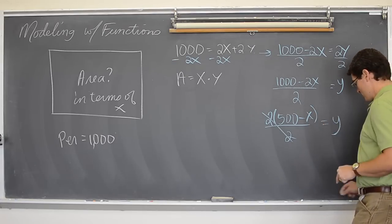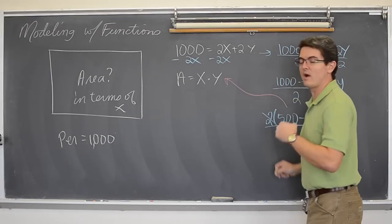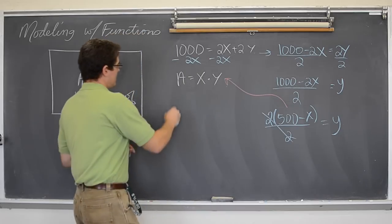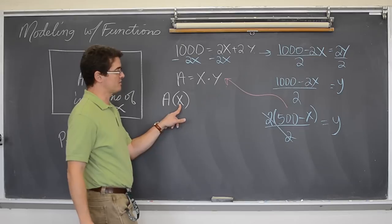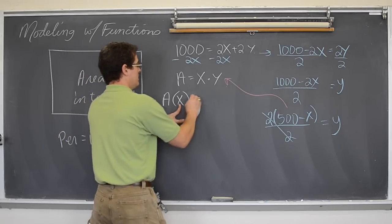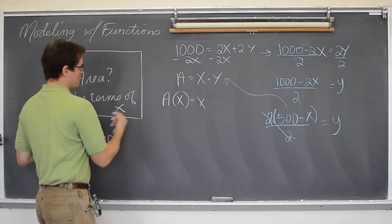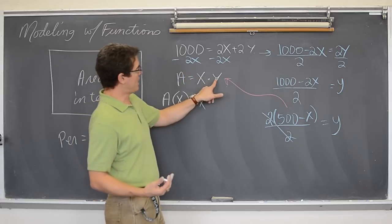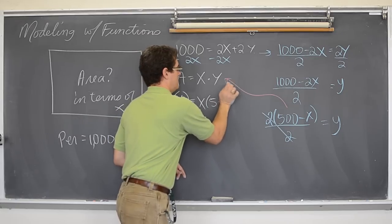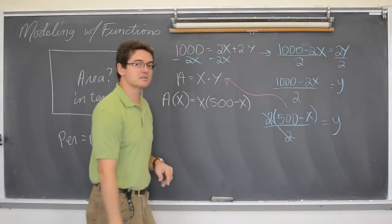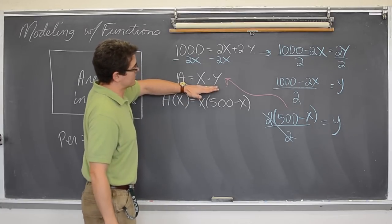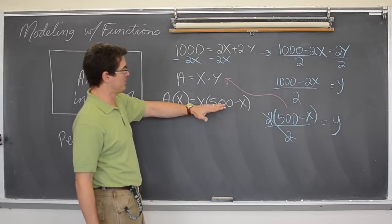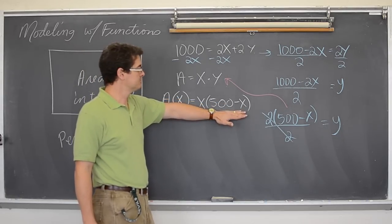That is going to go into the other equation, the equation for area that I actually care about, or want in my final answer. So my area in terms of x now, I can write it in function notation because it is only going to be in terms of x, not x and y, is x times y. But the y is going to come out and 500 minus x is going to go in its place. So now I went from the area of just any regular random rectangle to the area of a rectangle whose perimeter has been set to be a thousand.